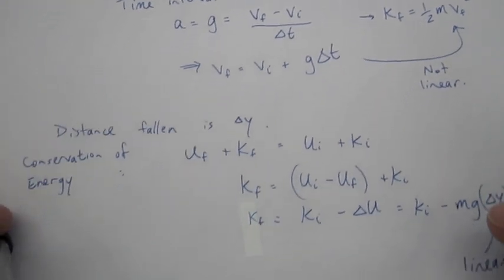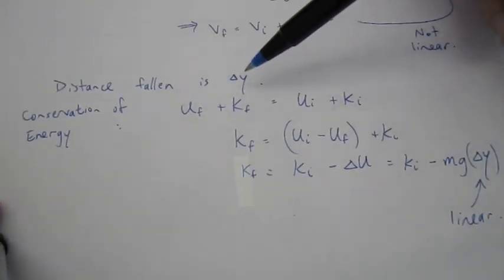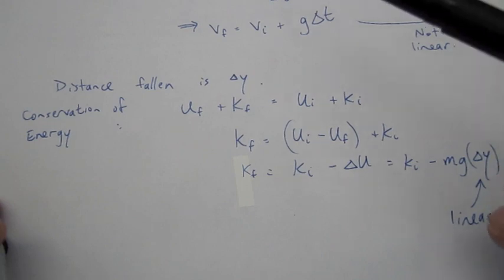As for B, the distances that it falls is delta Y. And this is really a conservation of energy idea.